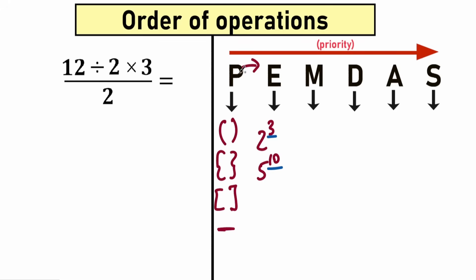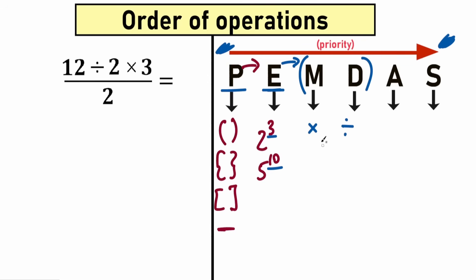I'm talking about priority going from left to right — higher priority on the left. After exponents we go to multiplication. M stands for multiplication. A lot of students are confused here because they think they must multiply first. But multiplication and division are one common group — they have the same priority. Whenever we have a mixture of multiplication and division, we need to perform it in order from left to right. Multiplication and division in PEMDAS have equal priority.